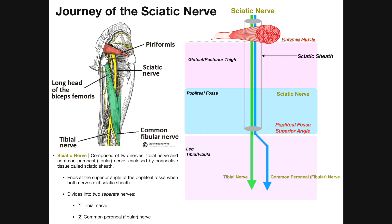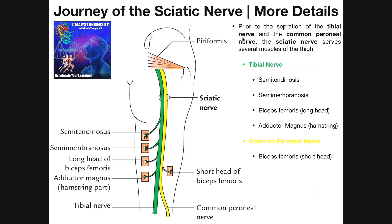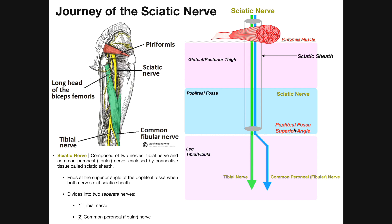The sciatic nerve passes underneath the piriformis through the gluteal region and into the posterior thigh, where it still remains the sciatic nerve — it hasn't yet branched into its two components, the tibial nerve (in green) and the common fibular nerve (in blue). As it descends through the gluteal region and posterior thigh, it does make some branches supplying muscles in the posterior thigh. But the two major parts do not separate until the nerve reaches the superior angle of the popliteal fossa.